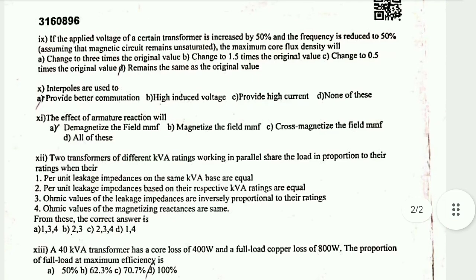Question 10: Interpoles means middle poles. They are used for better commutation. The effect of armature reaction will cross-magnetize the field — the correct answer is cross magnetizing.